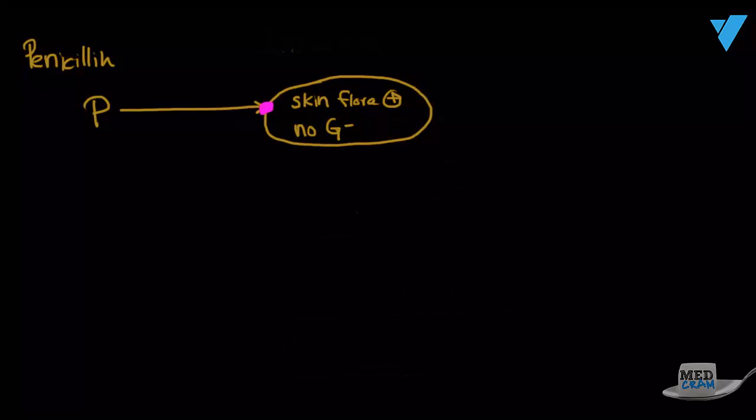The problem was these bacteria eventually became resistant to it, and they formed this thing called penicillinase, which basically destroyed the penicillin and prevented it from doing its job. So it basically formed resistance.